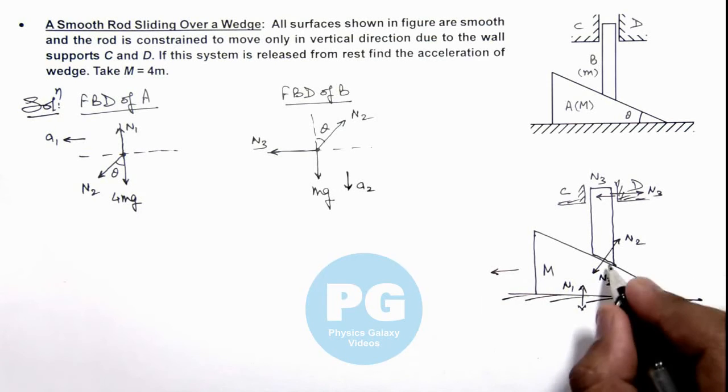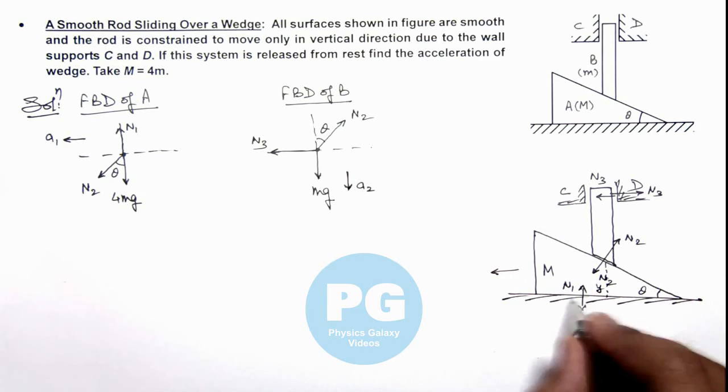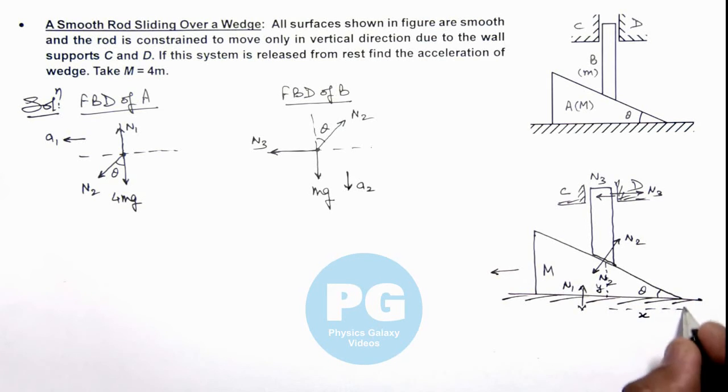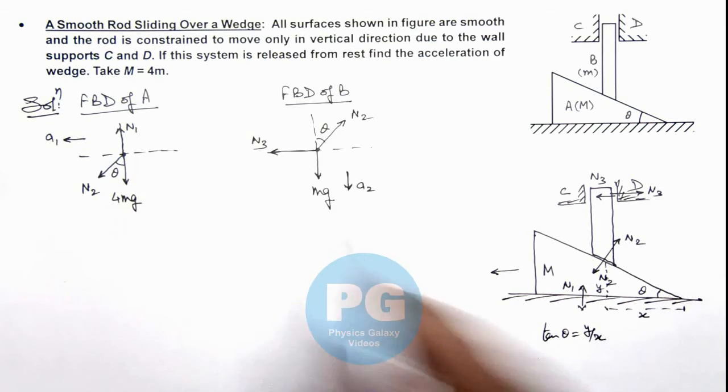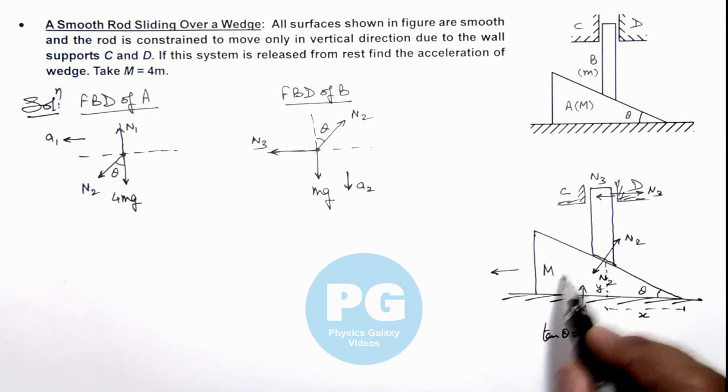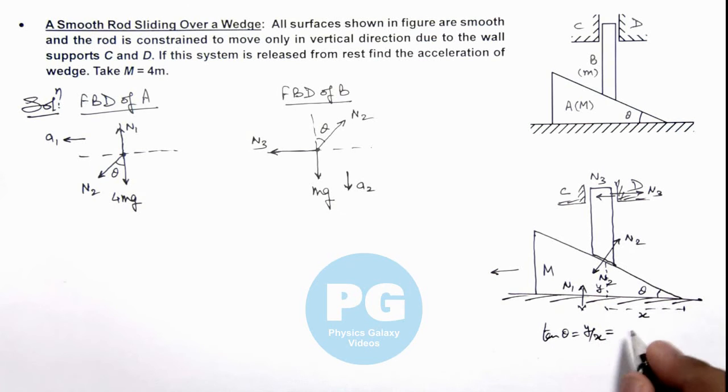Here you can see when the rod will move vertically down by this distance y, the wedge will move toward left by this distance x, because when wedge will move toward left by x, rod will come down with y. So here we can write the value of tan theta as y by x. So these distances would be proportional to the accelerations of the wedge and rod. So we can directly write the value of tan theta is equal to a2 by a1. So here we are getting the value of a2, acceleration of rod, is equal to a1 tan theta.